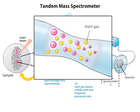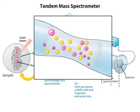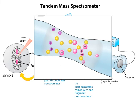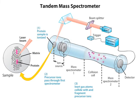The inert gas atoms collide with and fragment the precursor ions into smaller peptide chains. These new, smaller fragments are called product ions. The product ions then pass through the second mass spectrometer.